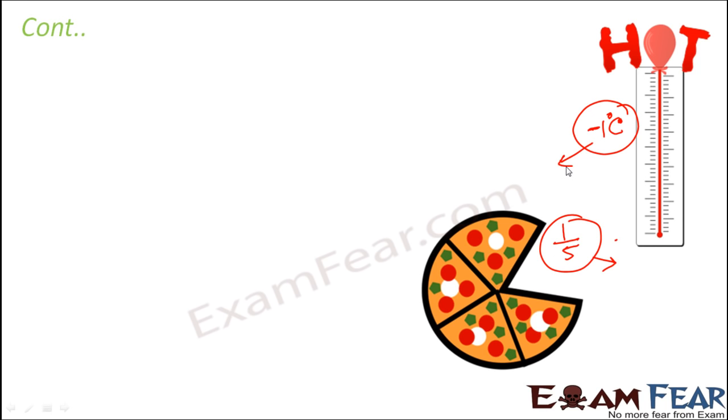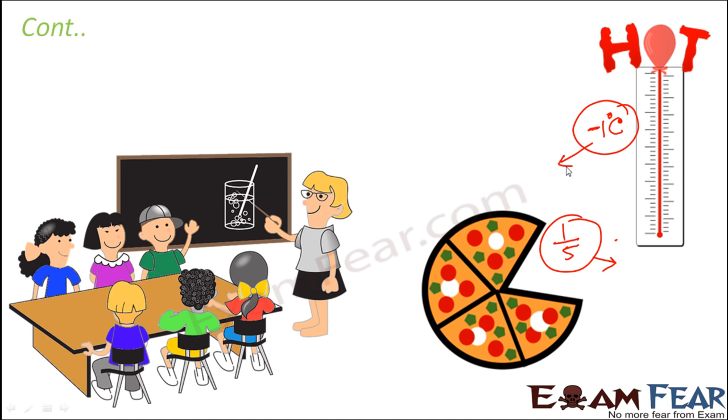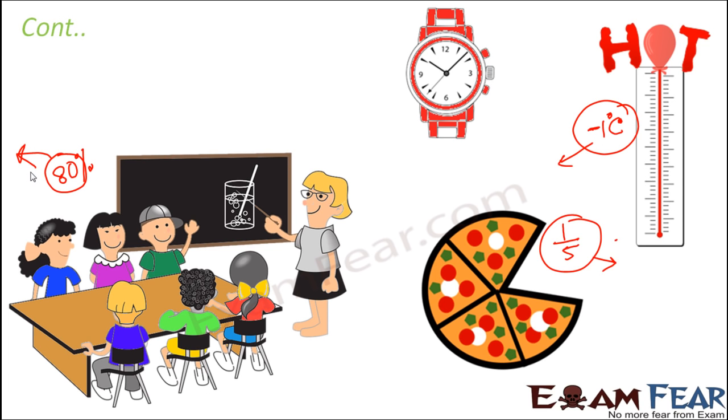Sometimes your teacher says that eighty percent of the class is regular in their attendance. This is a percentage, meaning that eighty students out of one hundred students come regularly to class. What is this eighty? This eighty is a number again.